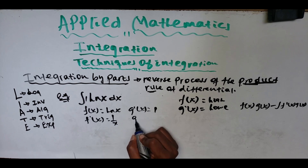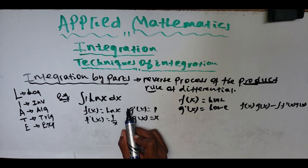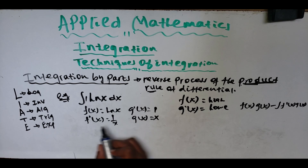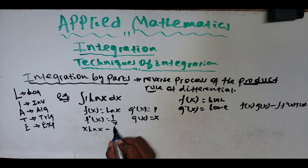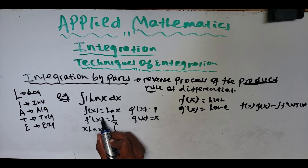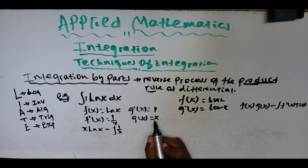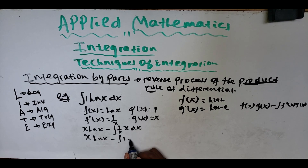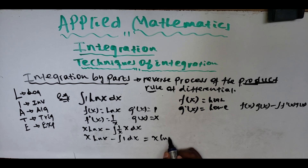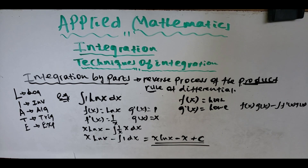So f'(x) = 1/x, and g(x) = the integral of 1 dx = x. Substituting into the formula: f(x)·g(x) = ln(x)·x, minus the integral of f'(x)·g(x) = (1/x)·x dx. This simplifies to x·ln(x) minus the integral of 1 dx. The integral of 1 is x, so the final answer is x·ln(x) − x + C.